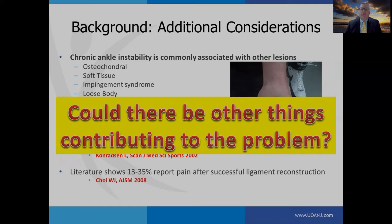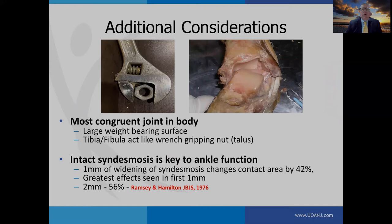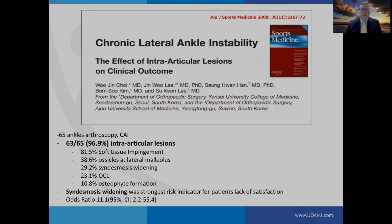The ankle is the most congruent joint in the body, with a large weight-bearing surface. The tibia and fibula act like a wrench gripping a nut — if the tension adjuster isn't tight, the wrench can't function appropriately. Similarly, if the syndesmosis is disrupted, it can't grip the talus properly. Ramsey and Hamilton's landmark 1976 paper noted that a one-millimeter increase in syndesmotic widening changes the contact area by 42%.